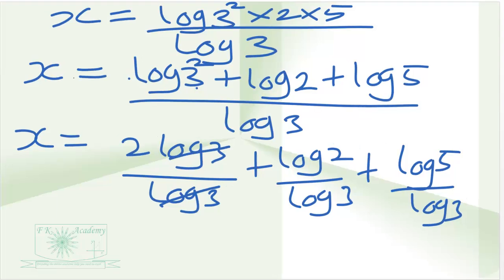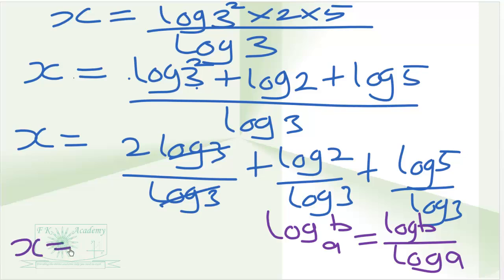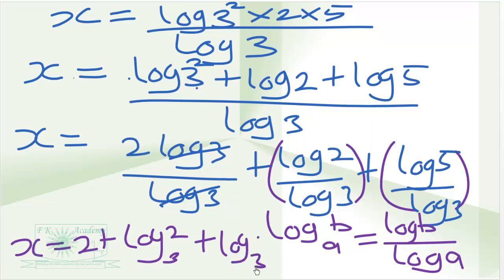Recall that log base A of B is equal to log B divided by log A. So log 2 over log 3 becomes log base 3 of 2, and log 5 over log 3 becomes log base 3 of 5.